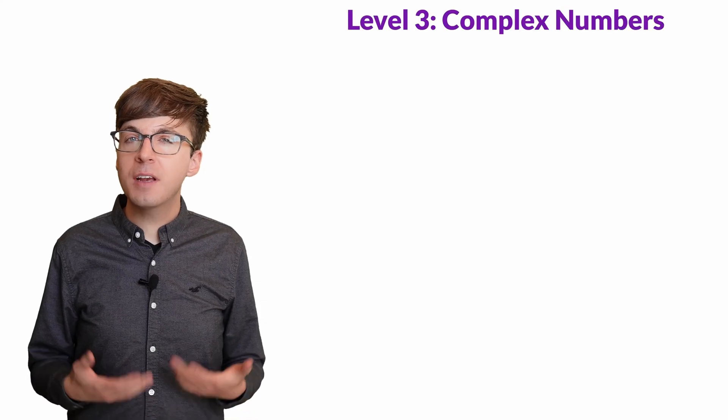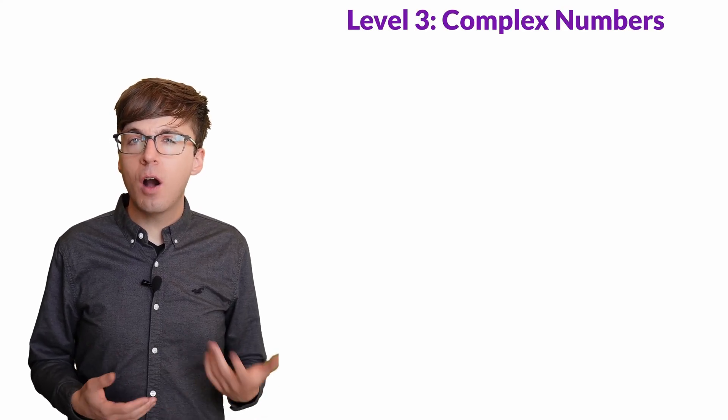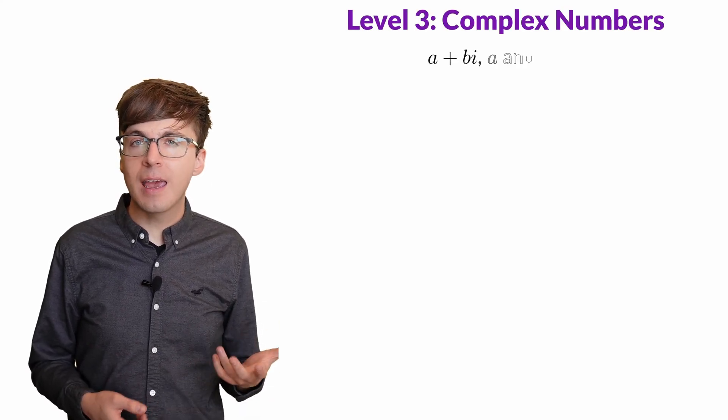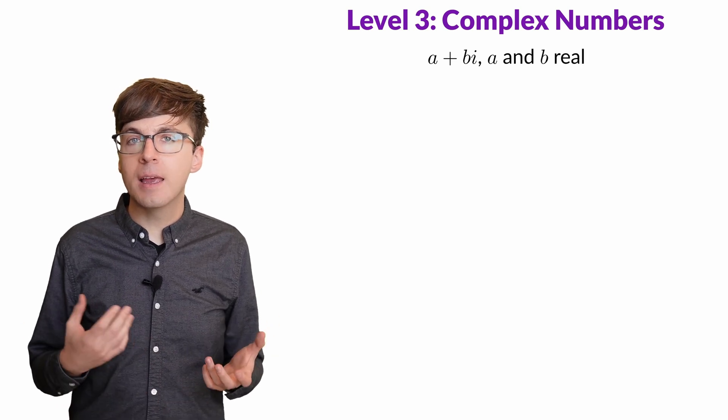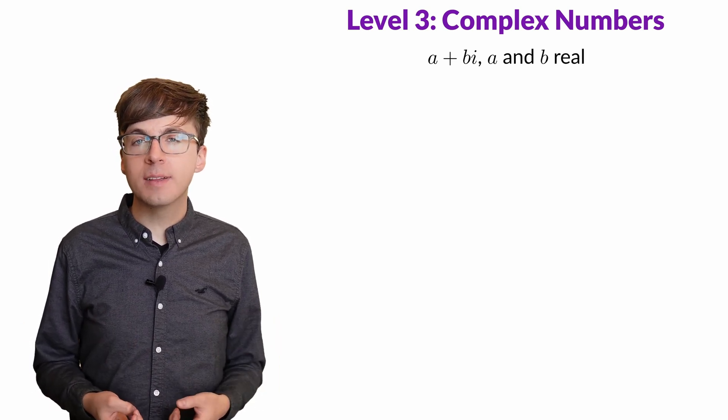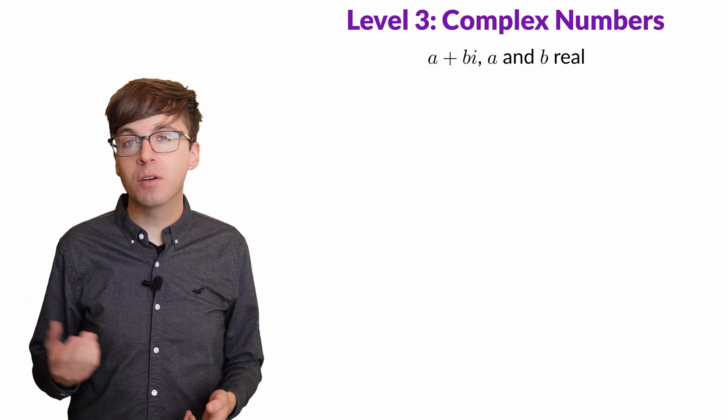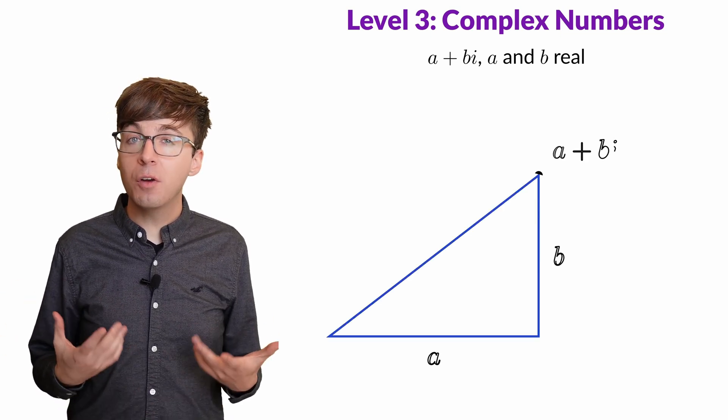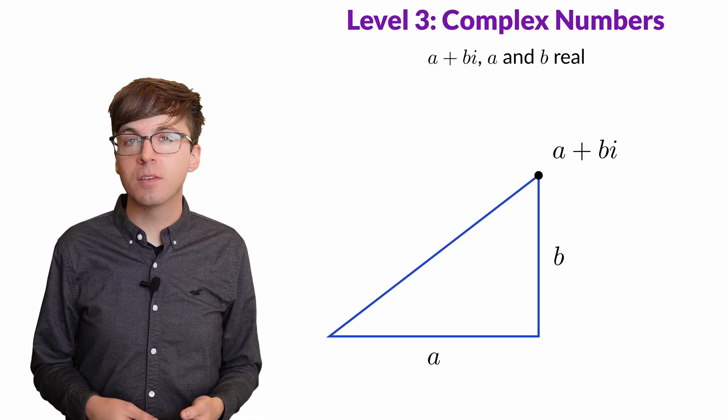For level 3, let's look at complex numbers. We often write a complex number as a + bi, where a and b are real numbers. And we put the real part on the x-axis and the imaginary part on the y-axis. But we can also use polar coordinates to identify this number.